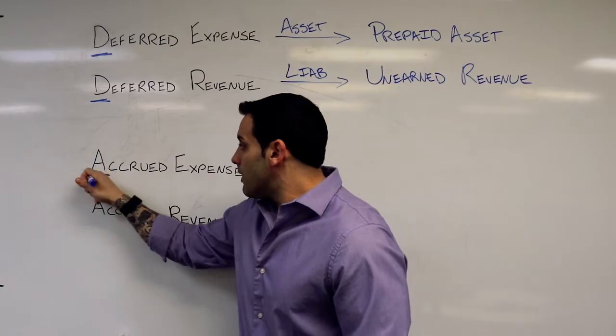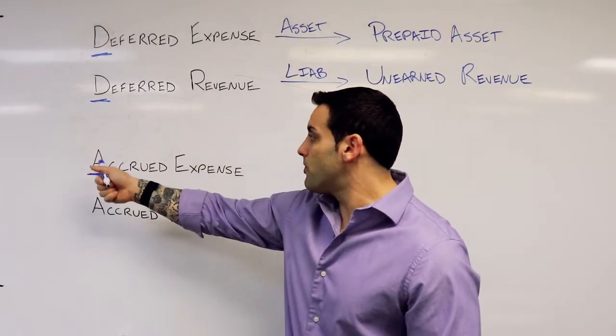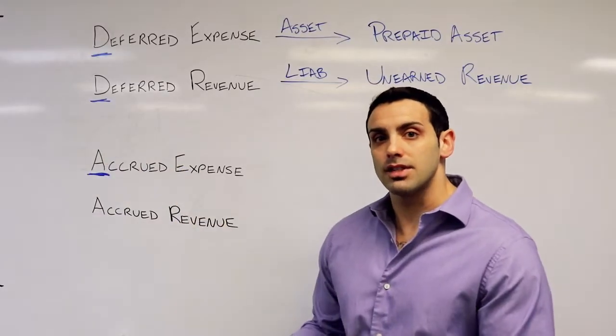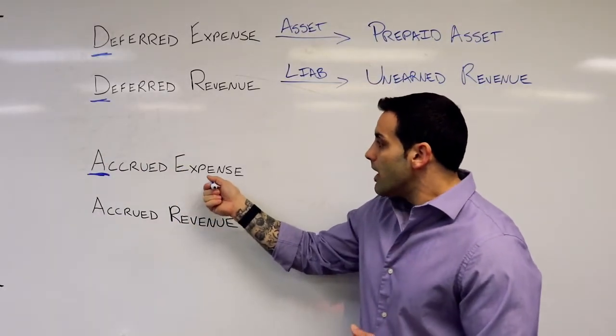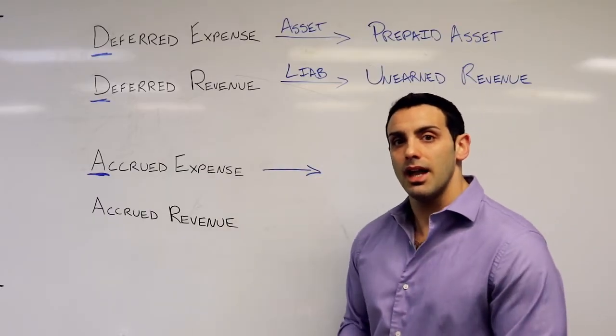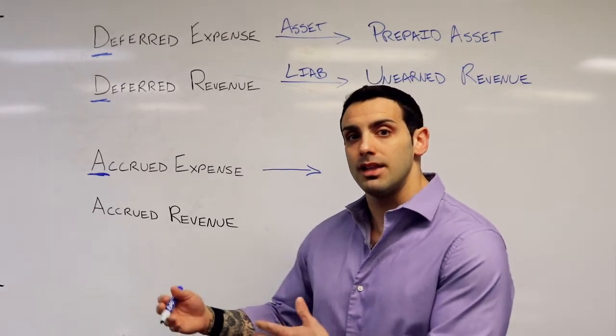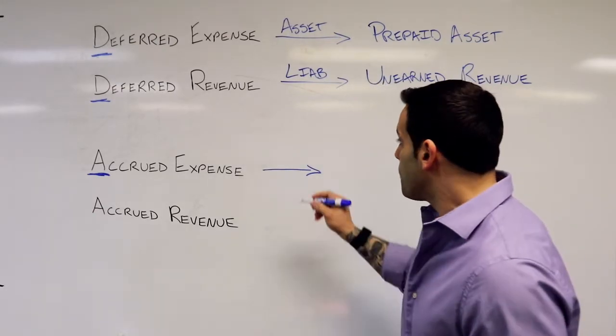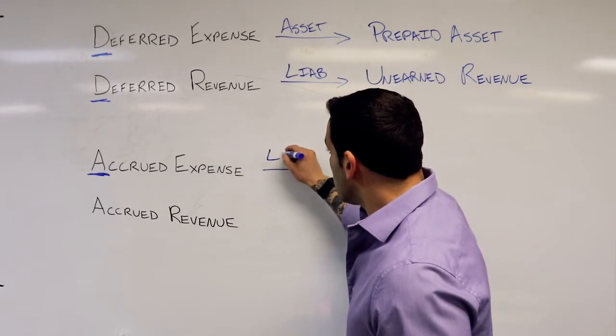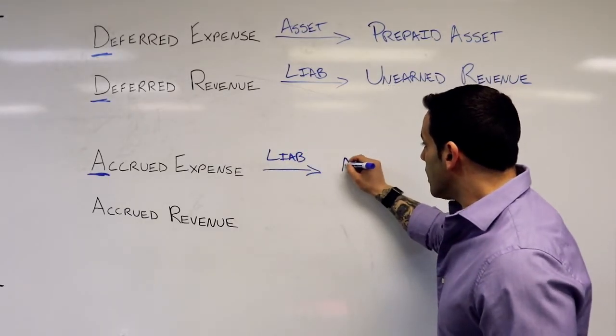Now as we get into accruals, think action before dollars. If I have an accrued expense, this means I incurred the expense before I paid the dollars for it. This is a liability—an account payable.